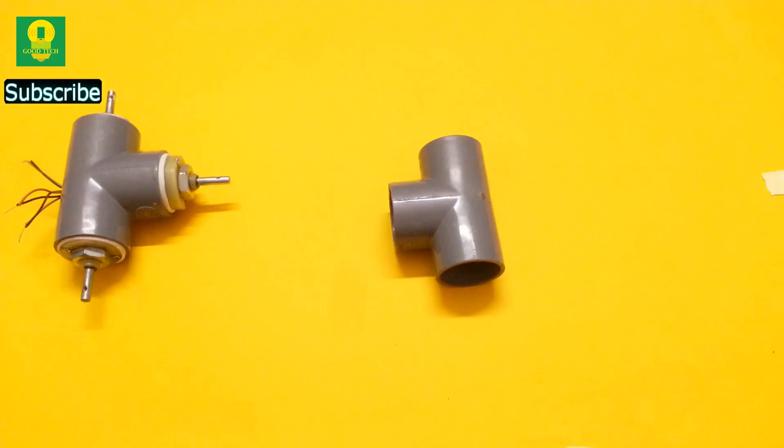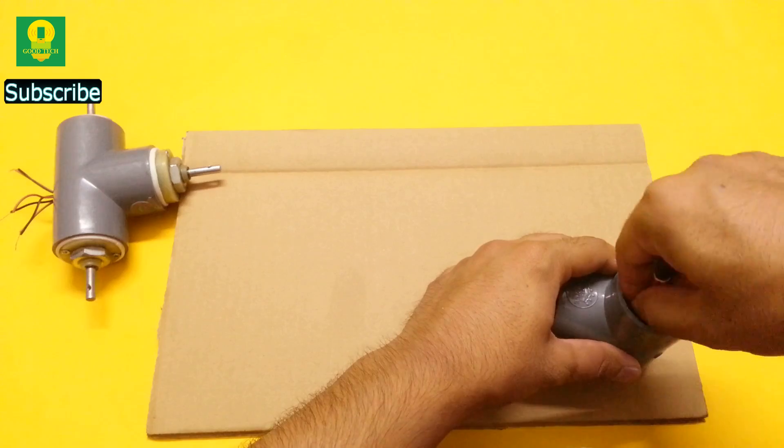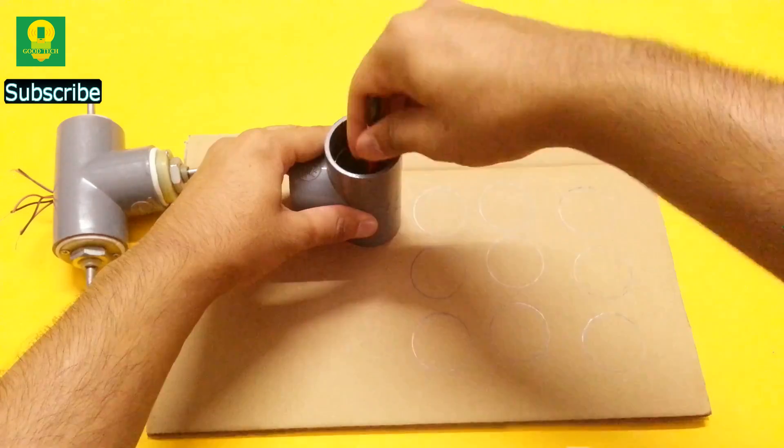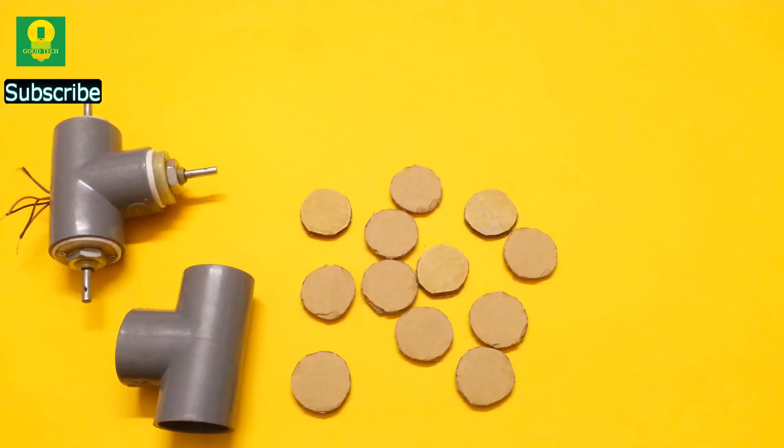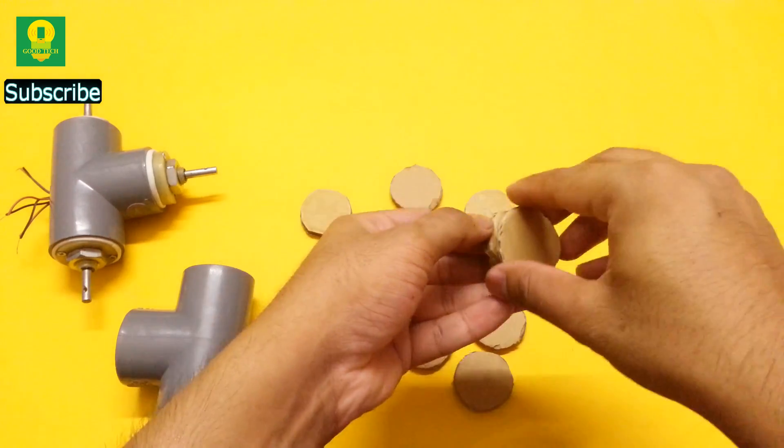Take another PVC tee and a piece of cardboard. Draw few circles of diameter equal to that of the PVC tee. Cut all the circles carefully. Using hot glue, paste them together to make three equal stacks.